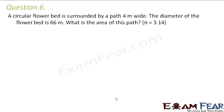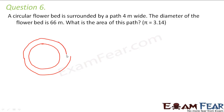A circular flower bed is surrounded by a path 4 meters wide. So you have a circular flower bed, and this flower bed is surrounded by a path all around it. In the question, the width of this path is 4 meters everywhere — wherever you measure this width, it is 4 meters. The diameter of the flower bed is 66 meters, meaning this entire diameter is 66 meters. What is the area of the path?